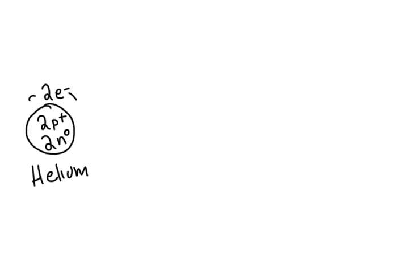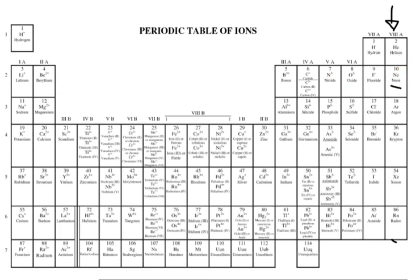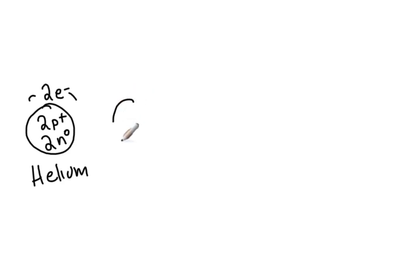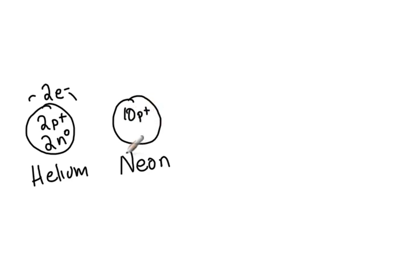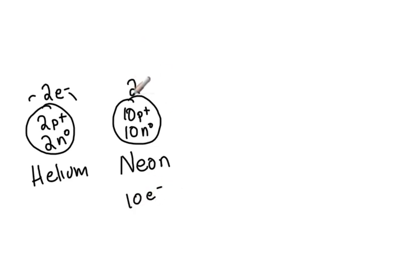If we go down to our second noble gas, that's neon. Neon has 10 protons and 10 neutrons. Because it's neutral, we know that to balance out these 10 positive protons we need 10 electrons as well. Those electrons fill up starting with the lowest energy level, so the first energy level will have 2 electrons. That leaves 8 left, and they will go in the second energy level.